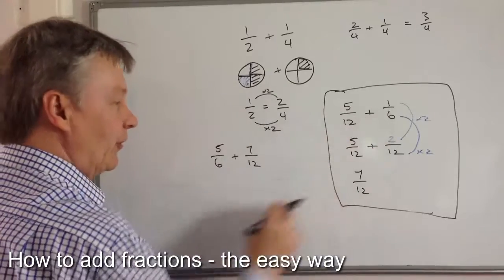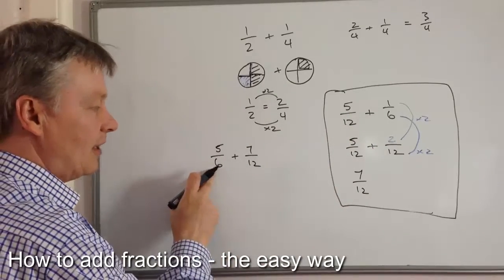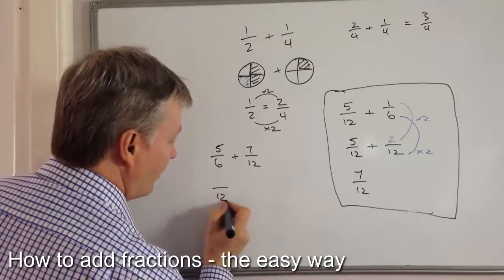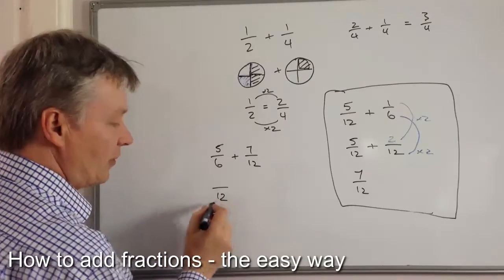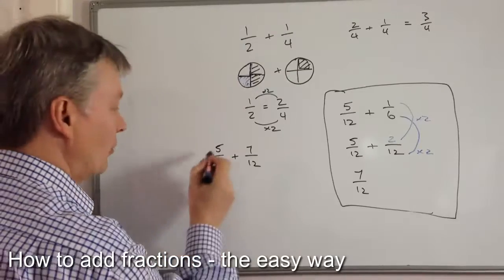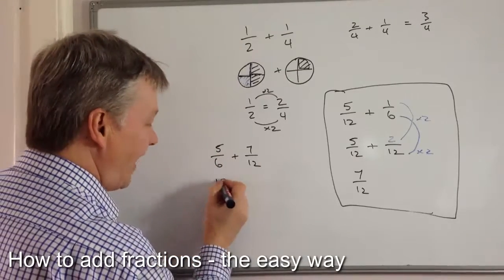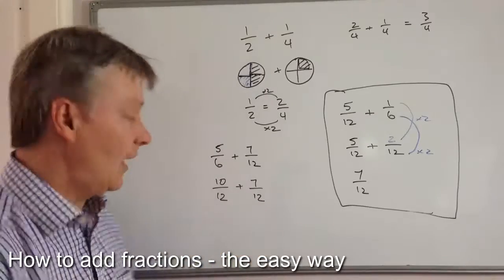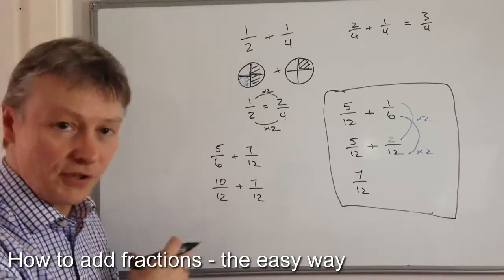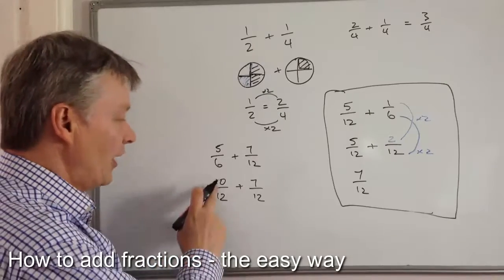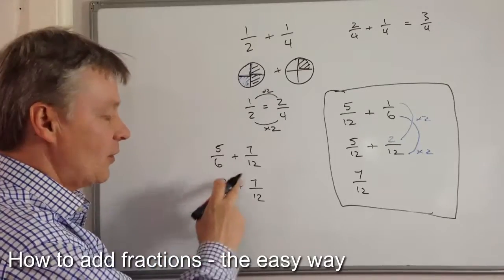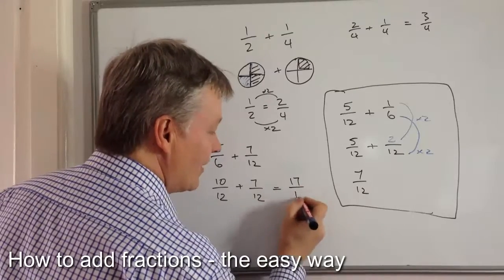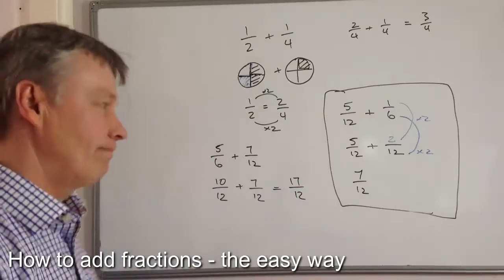Like we did before, I'm going to change five out of six to something out of twelve by multiplying by two. So I multiply the top by two — that's ten. So I've now got ten out of twelve plus seven out of twelve, which gives me seventeen out of twelve.